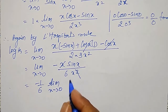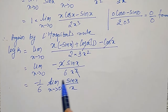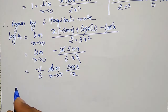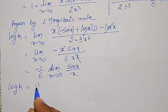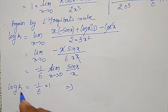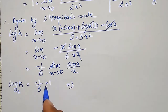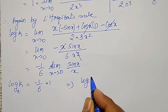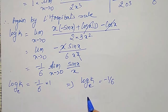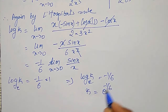Since limit as x tends to zero of sin x / x equals 1, we get log k = −1/6. Therefore, since the log is to the base e, we have log_e(k) = −1/6, which means k = e^(−1/6).